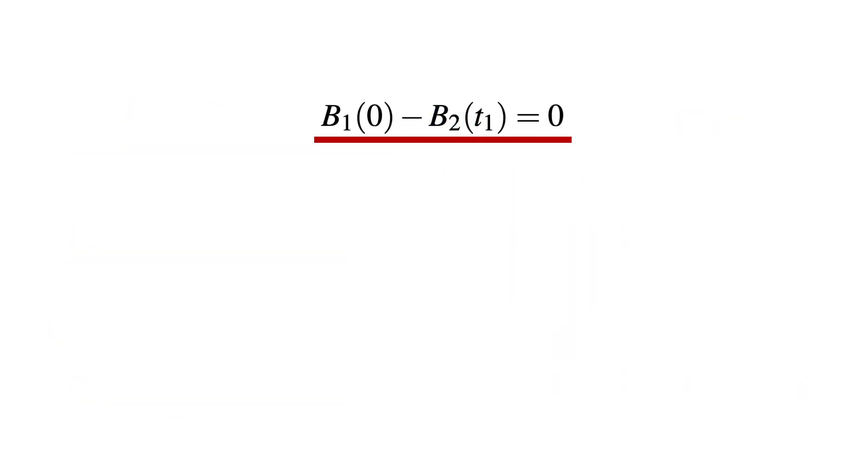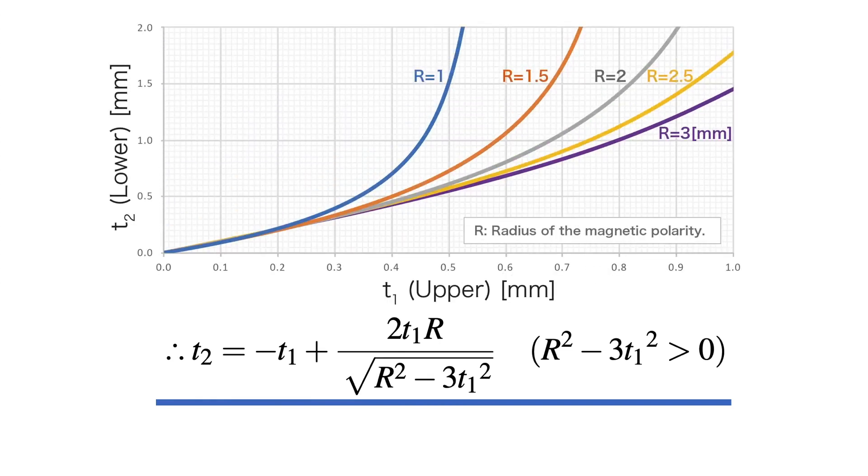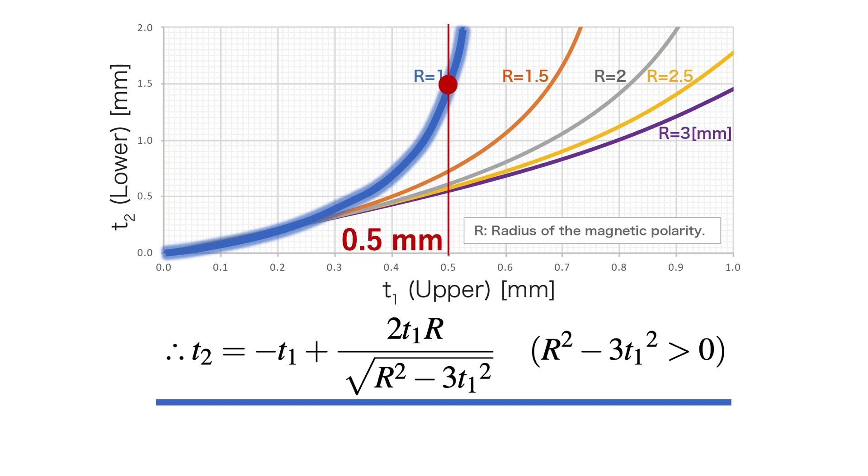Applying this formula, the proper thicknesses to balance the magnetic forces of the two stacked magnets can be calculated with ease. For example, if the magnetic sheet has a 1 mm radius magnetic pole, that is a pitch of 2 mm, and the upper sheet has a thickness of 0.5 mm, the lower sheet must have a thickness of 1.5 mm to balance the magnetic forces.